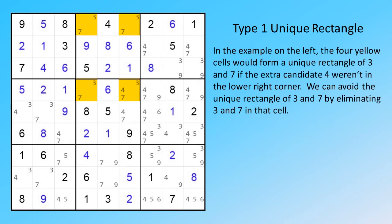In the example on the left, the four yellow cells would form a unique rectangle of 3 and 7, if the extra candidate 4 weren't in the lower right corner. We can avoid the unique rectangle of 3 and 7 by eliminating 3 and 7 in that cell.